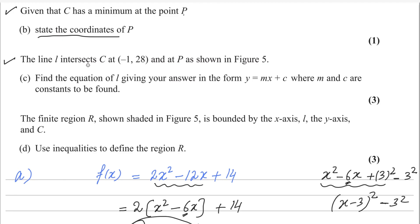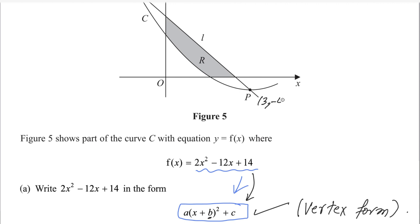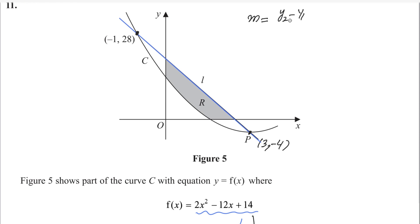The line L intersects C at (-1, 28) and at point P as shown in figure 5. Find the equation of line L, giving your answer in the form y = mx + c. One point is (-1, 28) and the other point is P = (3, -4). We can find the gradient using the formula (y₂ - y₁) / (x₂ - x₁).